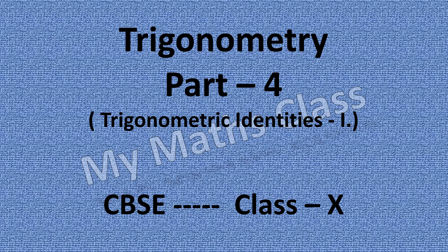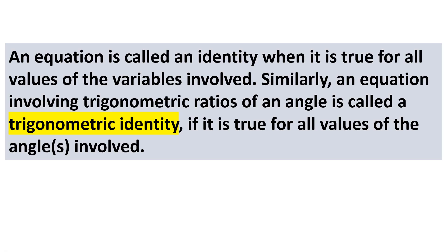Now, what is a trigonometric identity? We know that an equation is called an identity when it is true for all values of the variables involved. Similarly, an equation involving trigonometric ratios of an angle is called a trigonometric identity if it is true for all values of the angles involved.